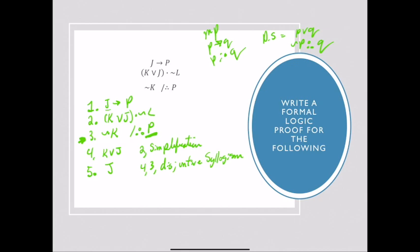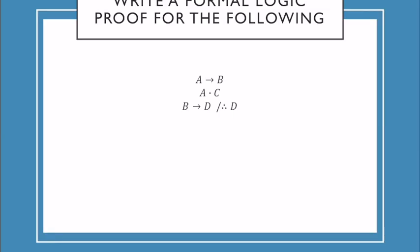Now that I have J all by itself, final step, I'm using rows 1 and 5 and modus ponens to isolate my P, which was my goal. Hooray!